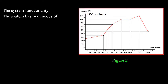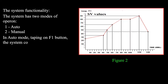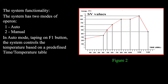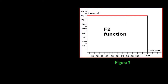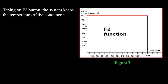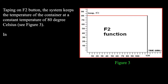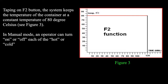The system has two modes of operation: auto and manual. In auto mode, tapping F1 controls the temperature based on a predefined time-temperature table integrated into the PLC control software program. Tapping F2 keeps the temperature of the container at a constant 80 degrees Celsius.